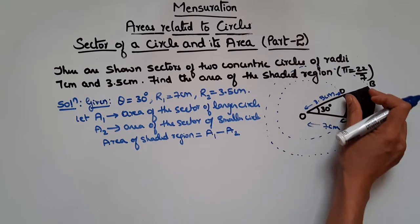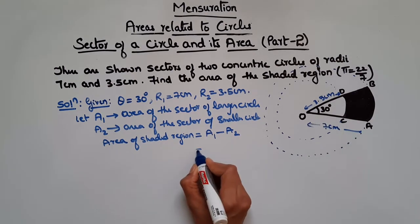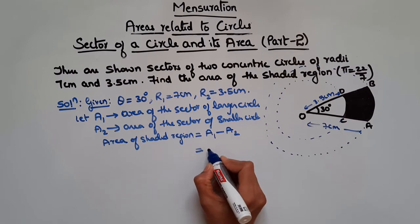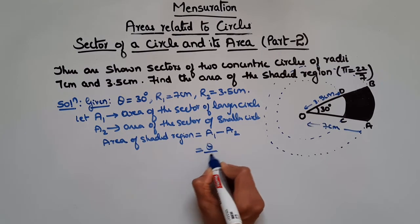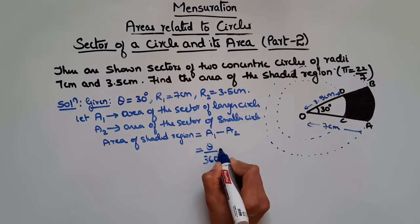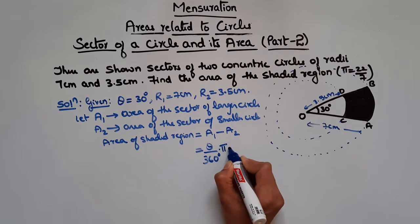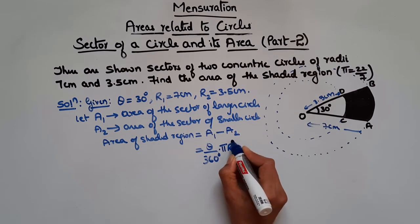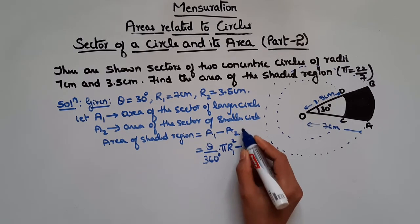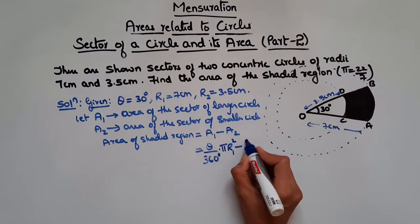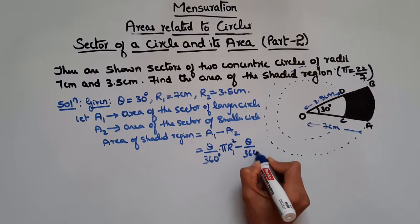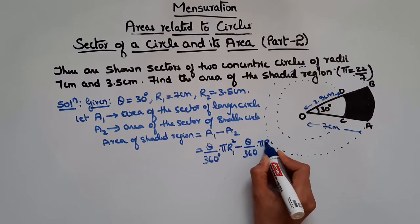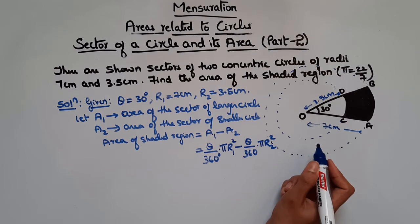A1 is the area of the sector of the larger circle, given by theta by 360 into pi R1 square. Minus the area of the sector of the smaller circle, which is theta by 360 into pi R2 square. In both cases theta is the same, so theta by 360 and pi are common, giving us theta by 360 into pi into R1 square minus R2 square.